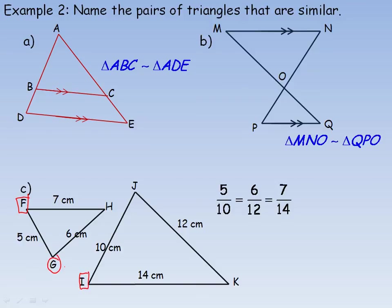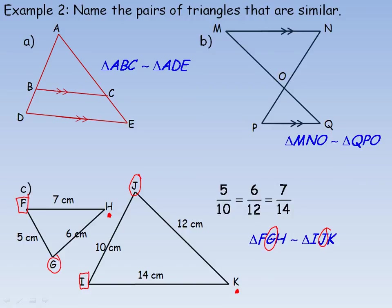G is the vertex between the 5 and 6 sides, so it should correspond to the vertex between 10 and 12, which is J. H is the vertex between the 7 and 6 sides, so it should correspond to the vertex between 14 and 12, which is K. So make sure those are written in the proper order: F corresponds to I, G corresponds to J, H corresponds to K. Therefore FGH is similar to IJK.